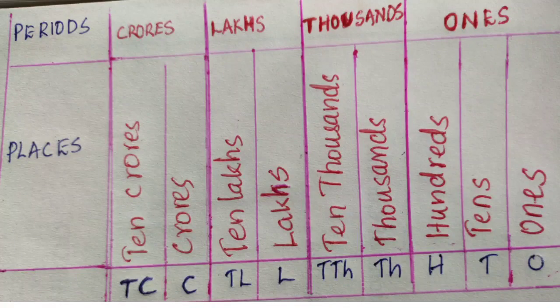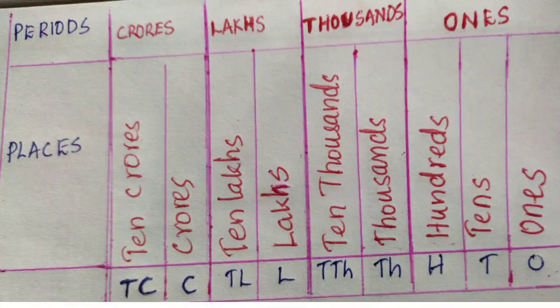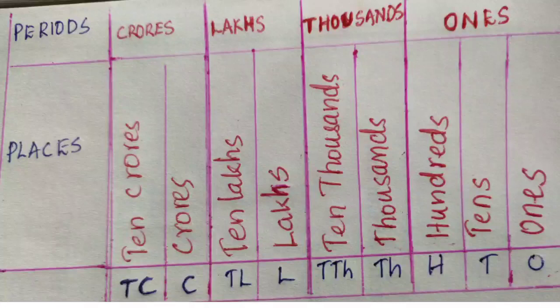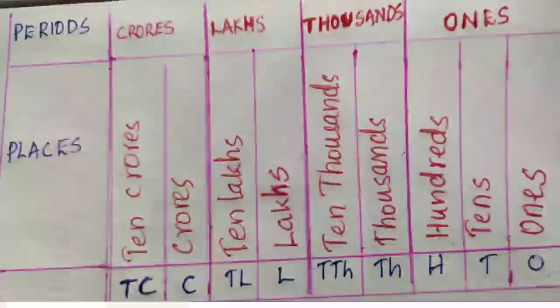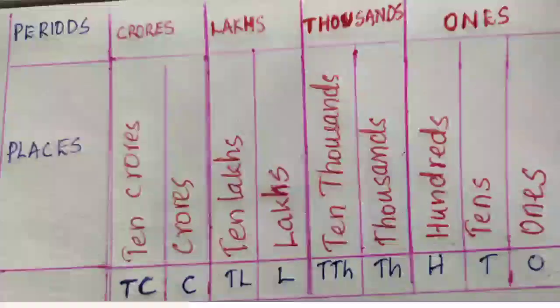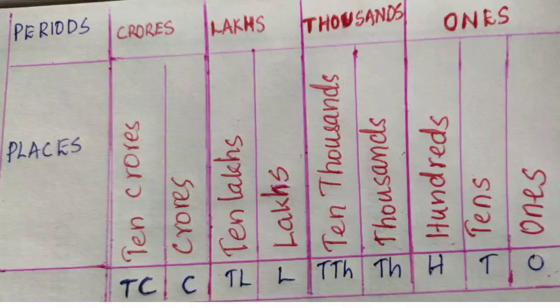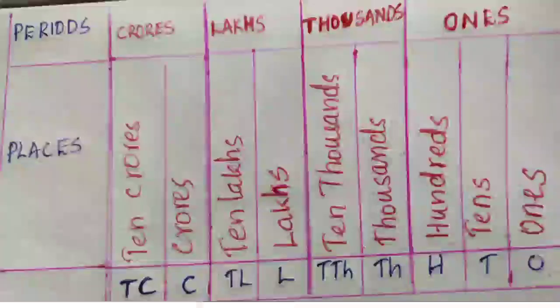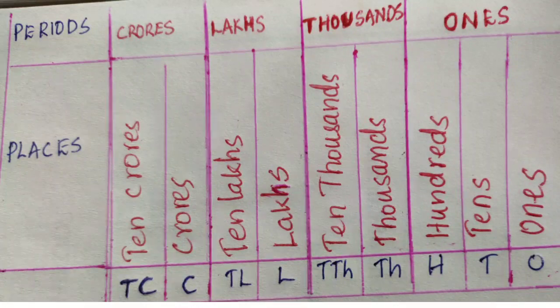Children, try reading big numbers by knowing their place names. Here you can see the place chart of numbers with place names, their short forms, and period names. That's all for today. We'll continue in the next part of this chapter. Until then, bye!